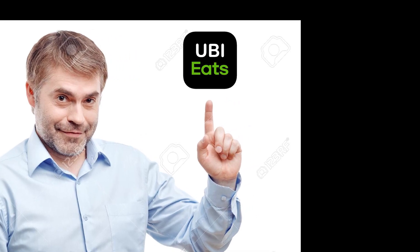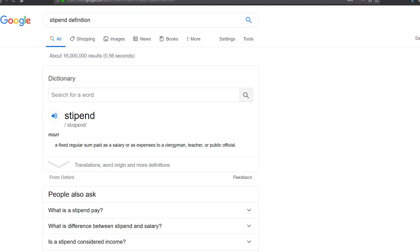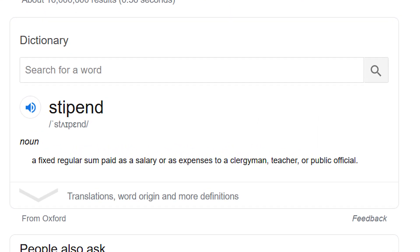One method I propose is implementing a UBI into our society. Now you may be going, oh Mitchell, what's a UBI? Well you see, dear viewer, a UBI is a universal basic income for everyone participating in the program. Everyone involved gets a stipend providing a certain amount of money over a certain period of time. In most cases, it's a thousand dollars monthly.